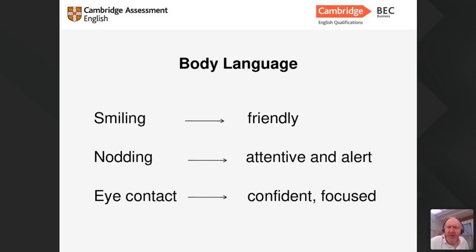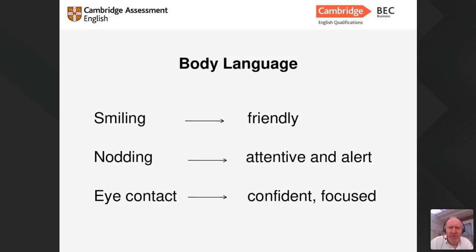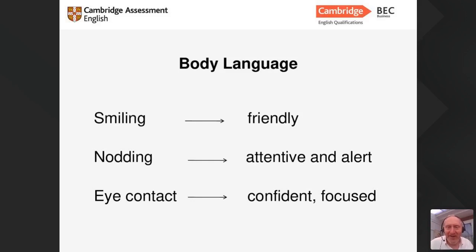It's always a good idea to nod when somebody else is speaking — it means you've understood, you're listening attentively, and it gives them a good impression of you. Regarding eye contact, it's important that the audience knows you're engaged with them, but there are techniques if you feel uncomfortable looking people in the eye. You shouldn't stare at anyone or look into their eyes for too long because that will concern them.